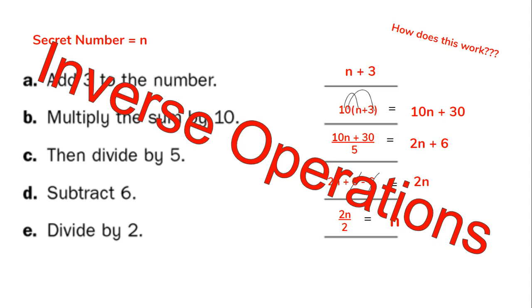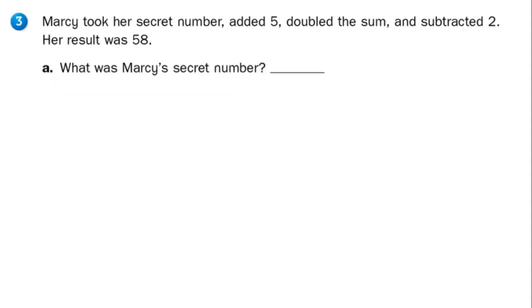Let's take a look at some more problems. Marcy took her secret number, added 5, doubled the sum, and subtracted 2. Her result was 58. What was Marcy's secret number? We're going to be working backwards here. Pause the video and see if you can figure out what her secret number was.